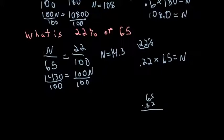So 2 times 5 is 10, carry my 1. 2 times 6 is 12, plus 1 is 13. Then 2 times 5 is 10, 2 times 6 is 12. Add this up: 0, 3, 4, 1. I got two decimals in my problem, so I need two digits behind the decimal in my answer. So it would be 14.3. So either way, you can see we're getting the same answer.